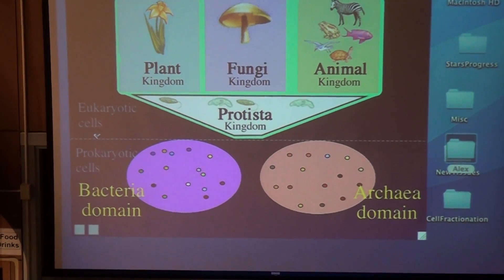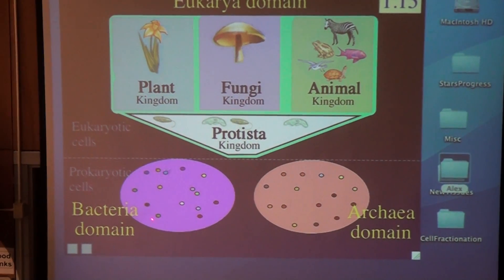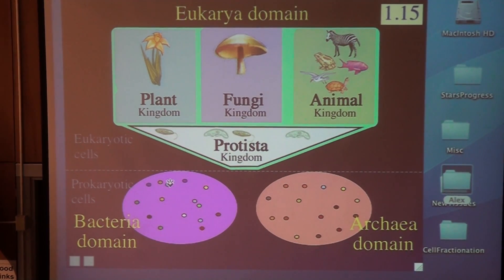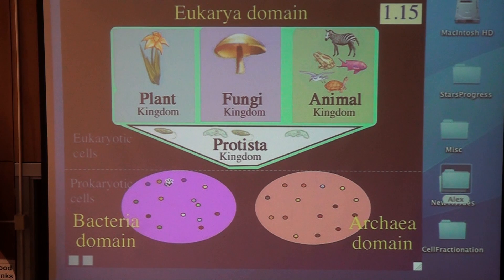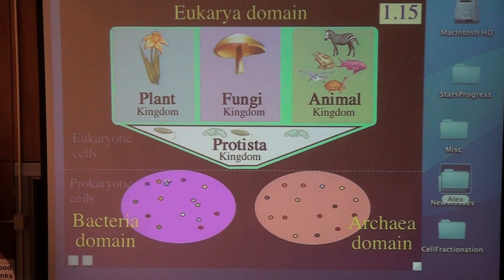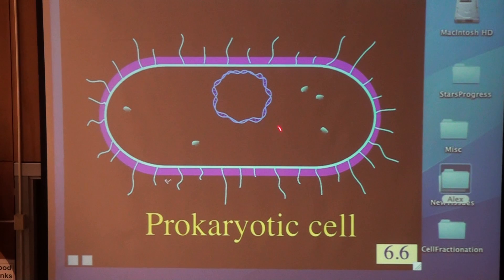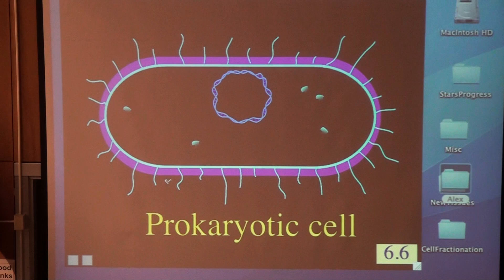The prokaryotes are the species that we find in the bacteria kingdom and the archaea kingdom. Their defining characteristic is that they are prokaryotes — meaning they don't have any nucleus around their DNA. They've got some other traits as well: they only have one chromosome and it's always a circular chromosome. They are all unicellular organisms — their entire body is just one tiny little cell.